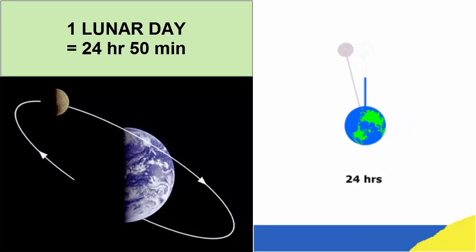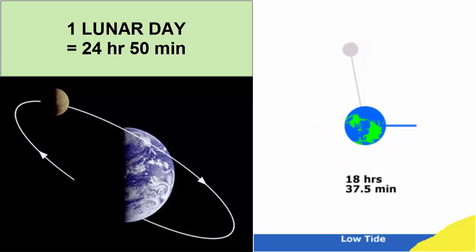What does that mean? After the Earth is rotated once relative to the Sun, 24 hours, it has to rotate another 50 minutes to catch up with the Moon, which during that 24 hours moved 1/29th its way around its orbit around the Earth. 24 hours and 50 minutes is a lunar day.